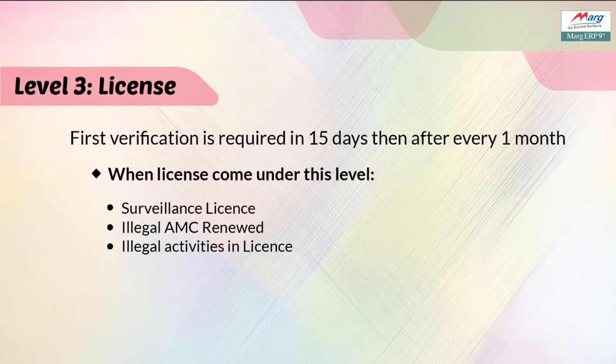Now let us come to the third level of license verification. If any license is being misused, or illegal AMC has been renewed, or illegal activity is going on in that license, then first verification needs to be done within 15 days, and then the license needs to be verified after every one month.